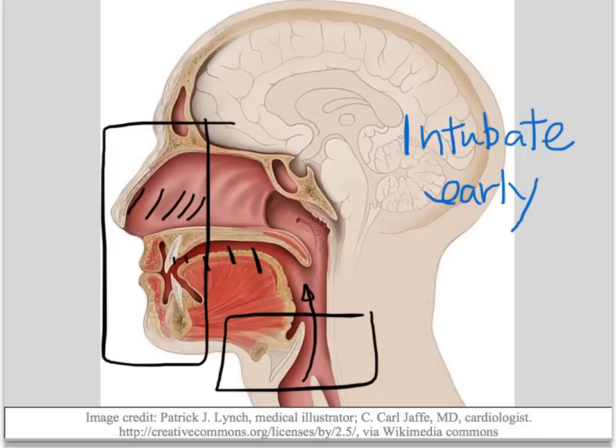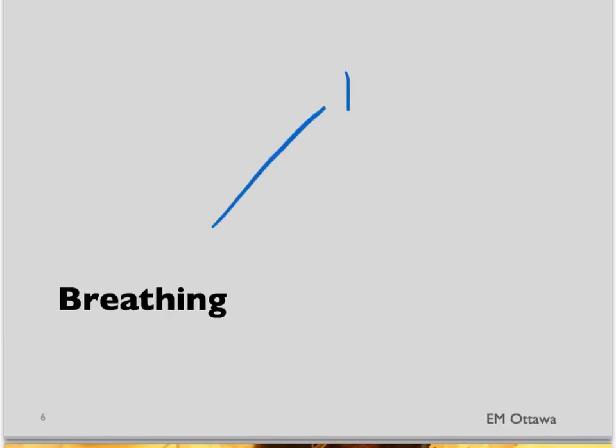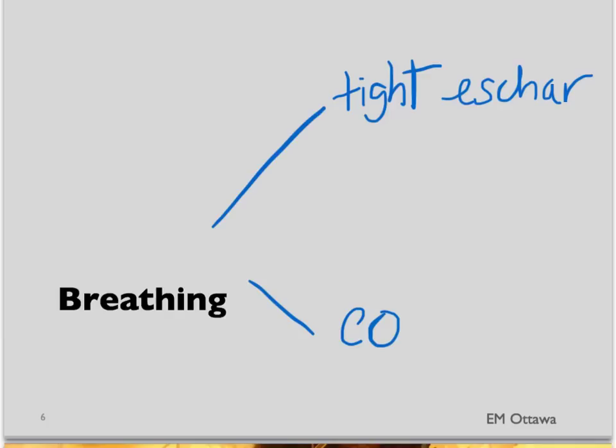Next, we'll go towards breathing. For breathing, you want to make sure that the patient is ventilating properly after the airway is secured. There are two potential problems with breathing. First, a tight eschar will cause ventilation to be difficult because of a constricted chest. The second problem with breathing could be because of carbon monoxide that is competing with oxygen to bind to hemoglobin, making the use of hemoglobin less efficient for the body.